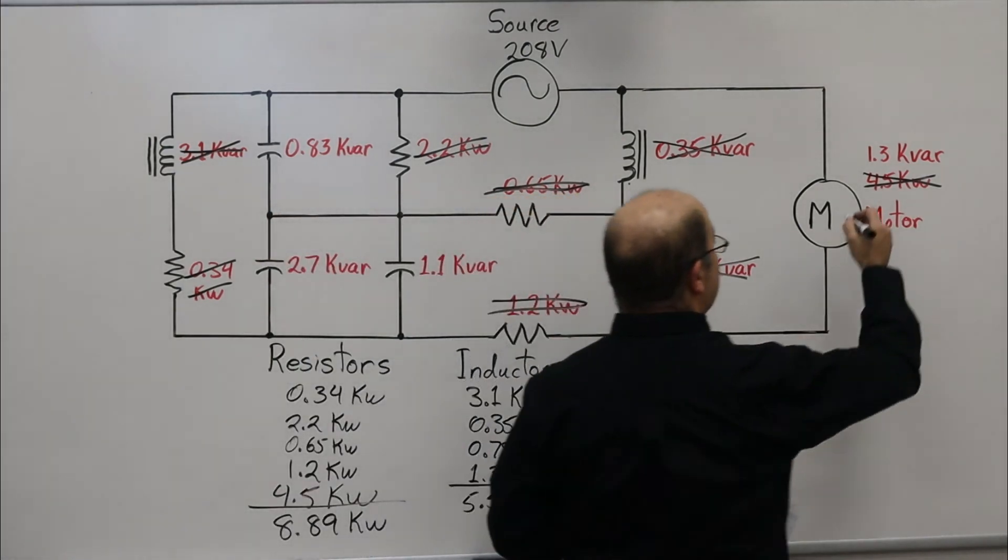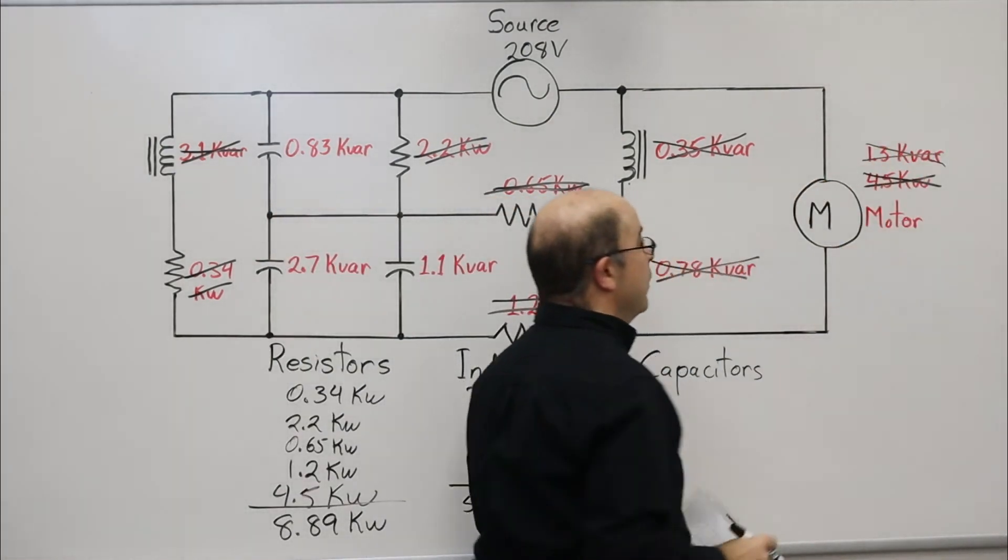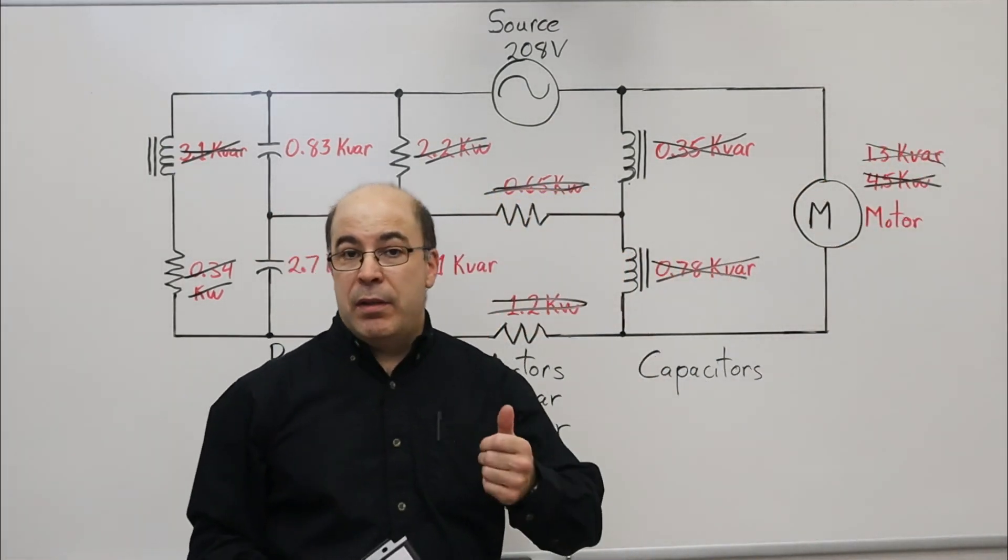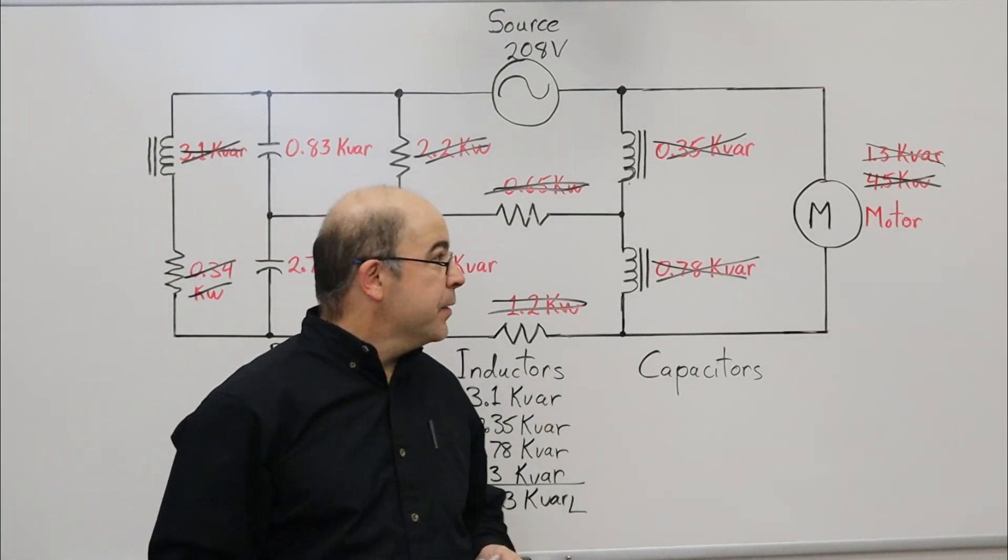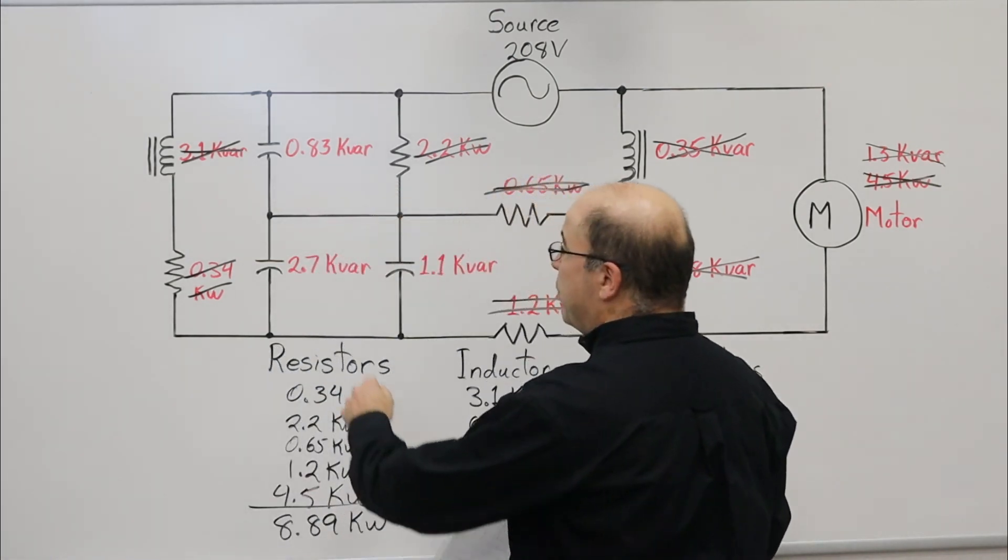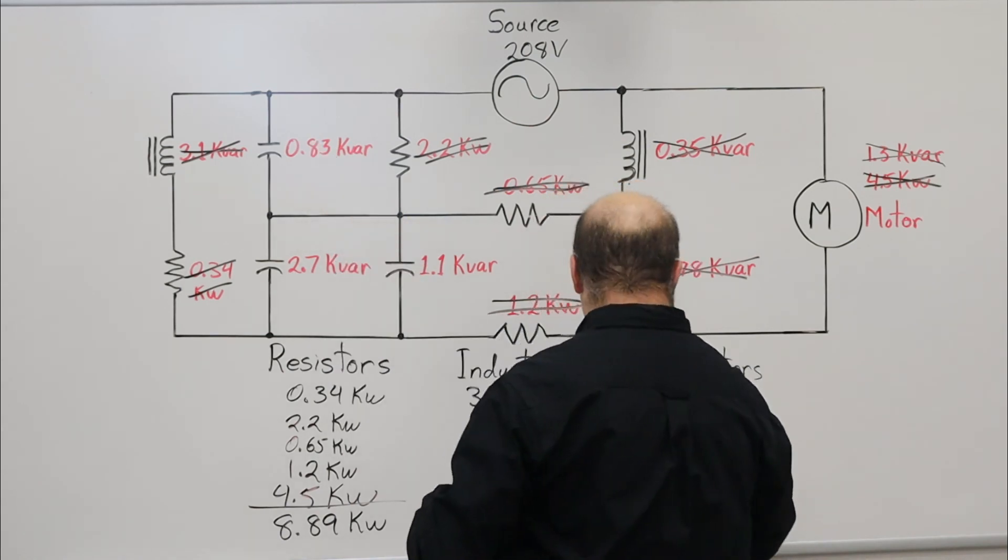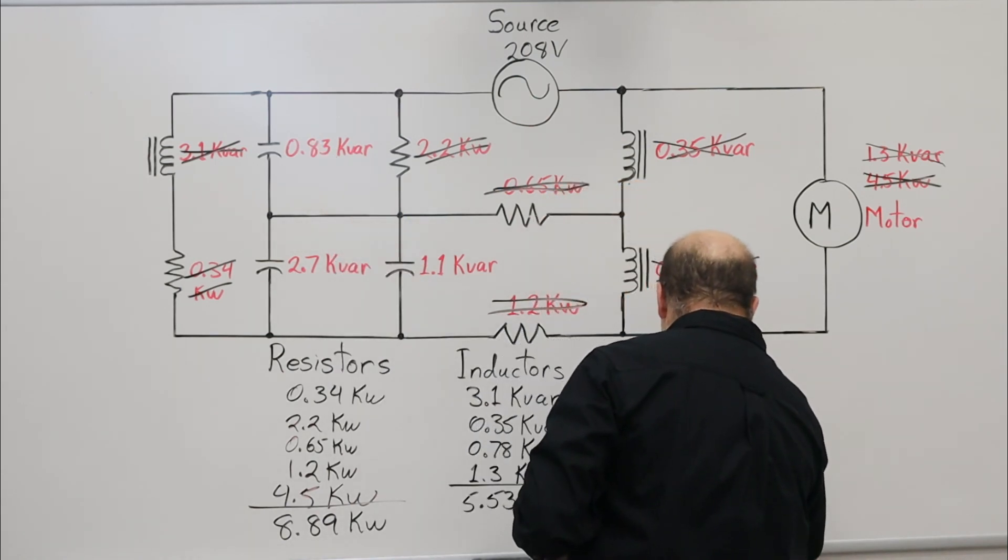Now, all that remains is to tabulate our capacitors. Again, working from left to right: 0.83.